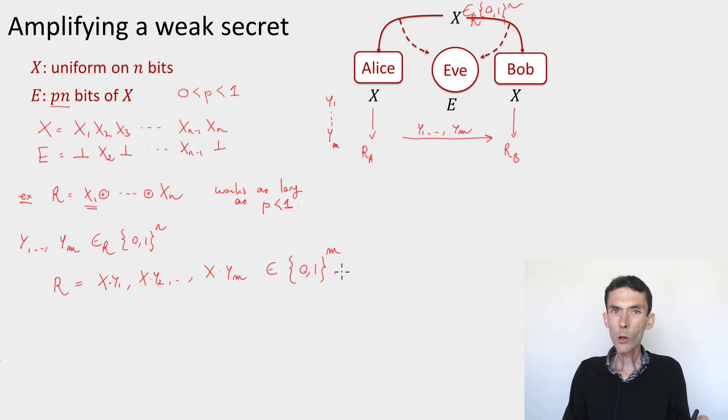And the question of course is whether this is secure or not. Is it the case that with high probability over the choice of these random strings y_1 up to y_m, these bits x·y_1, x·y_2, ..., x·y_m look uniformly random? So you can show that this is the case and this is natural as long as you don't try to get too many bits out of the procedure like this.